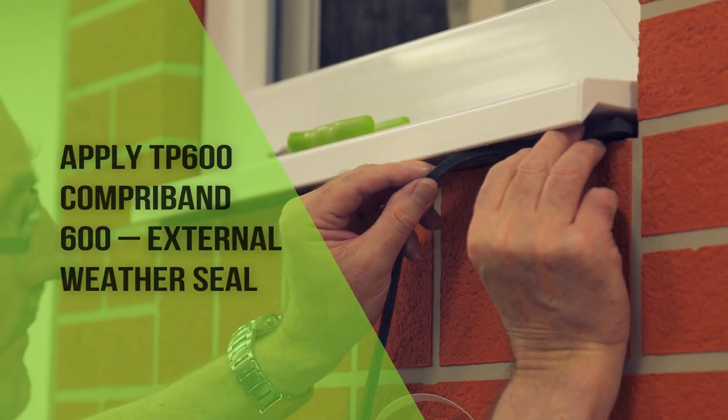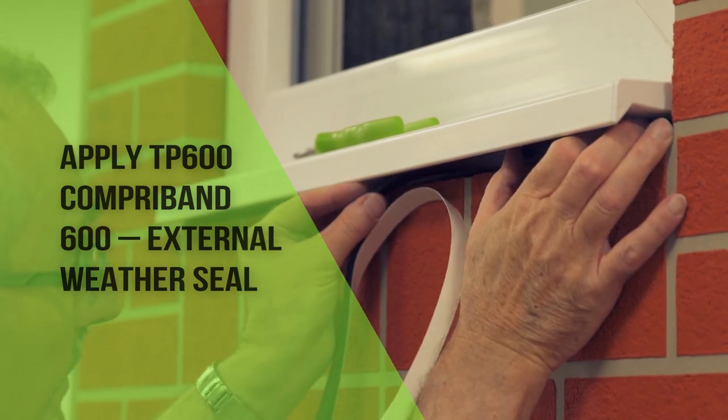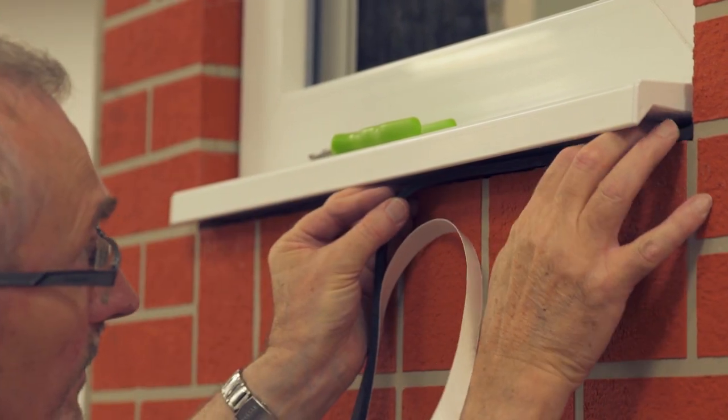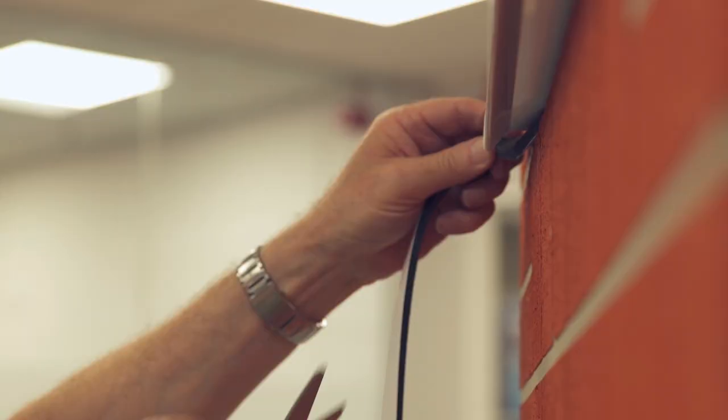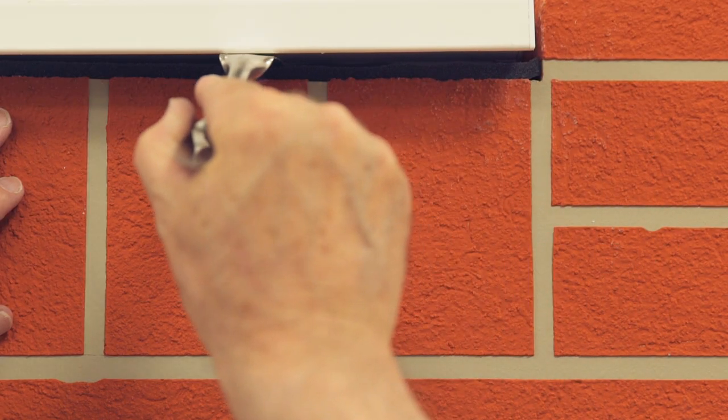Apply the TP600 under the sill. Ensure the tape is firmly bonded to the structure by pressing with a flat blade.